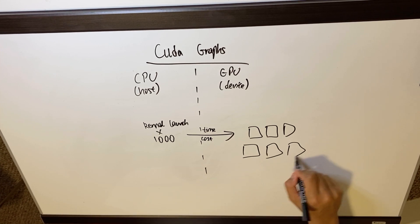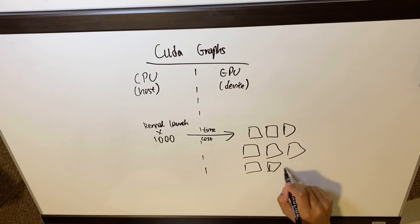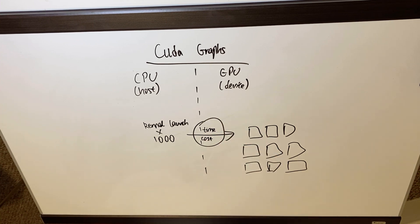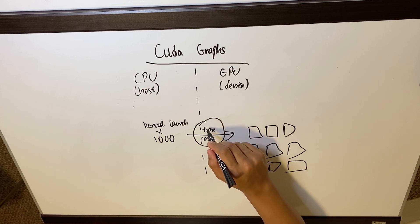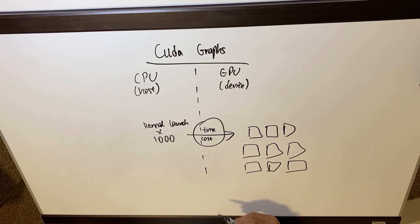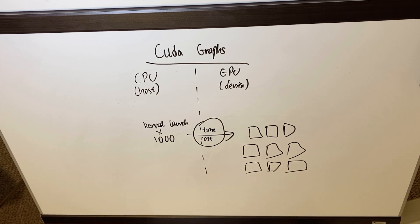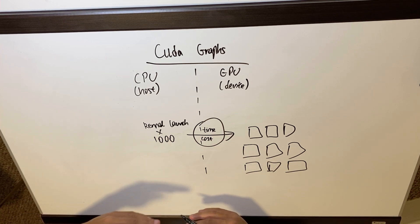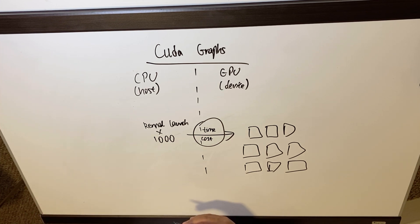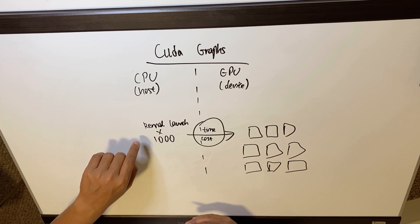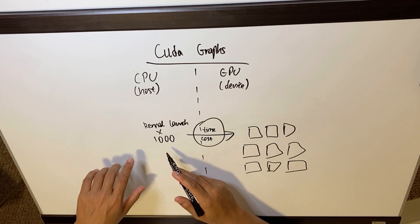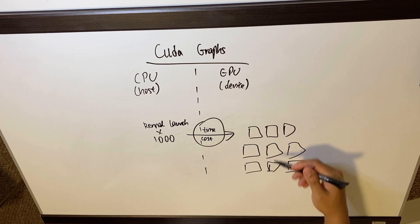The key benefit is that the initialization time cost only happens once. When you have to do additional kernel launches, you're only paying that overhead cost one time. Since that cost isn't repeating as much, you get a more efficient algorithm. Structurally, what CUDA graphs is trying to achieve is cutting down the initialization and launching overhead for each and every kernel launch.